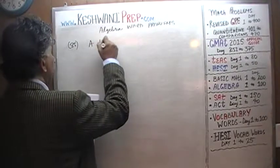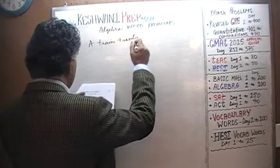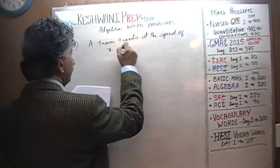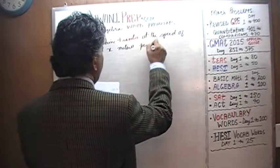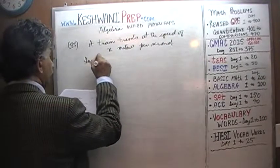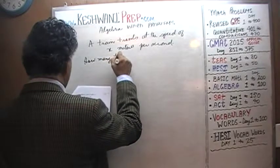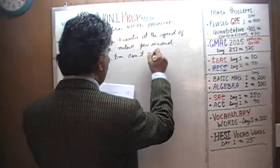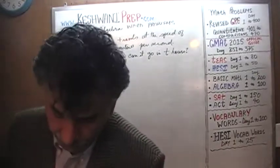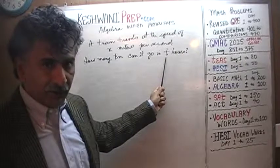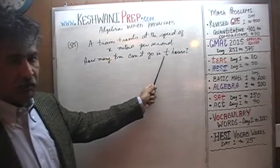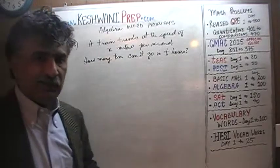So we have a train that travels at the speed of x meters per second. How many kilometers can it go in t hours? Now, that t is just a multiplier. If t happens to be one, then this boils down to: how many kilometers can it go in one hour, which is the same as asking what this speed translates into in kilometers per hour.